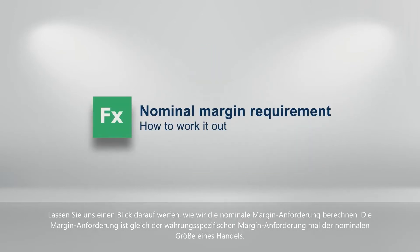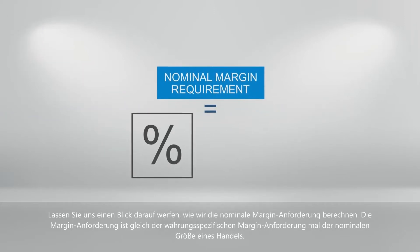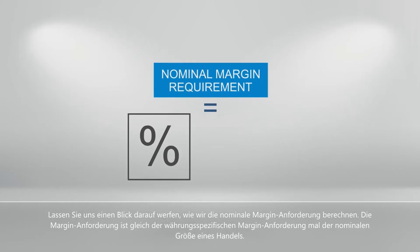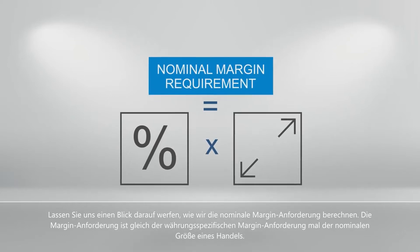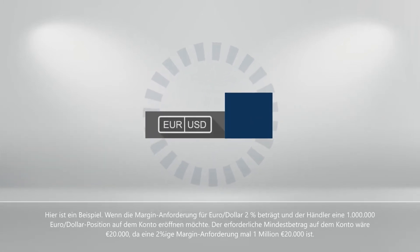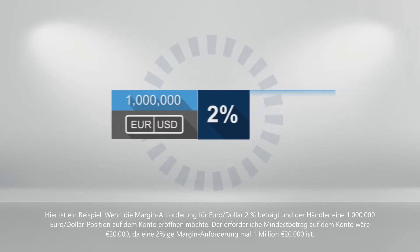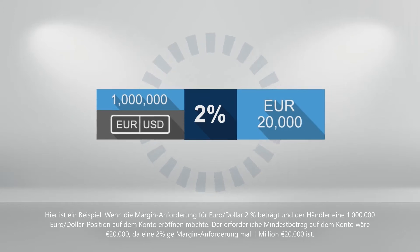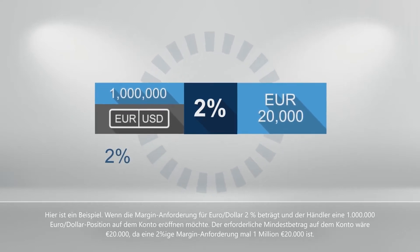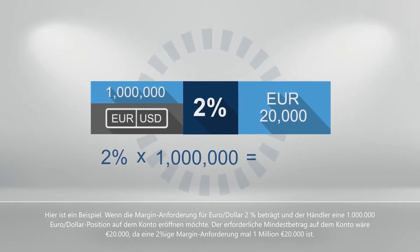Let's take a look at how we calculate the nominal margin requirement. Nominal margin requirement equals the currency-specific margin requirement times the nominal size of the trade. For example, if the margin requirement for euro-dollar is 2% and a trader wishes to open a 1 million euro-dollar position, the minimum required amount would be 20,000 euros, because 2% times 1 million equals 20,000 euros.